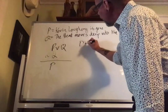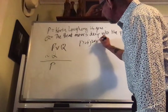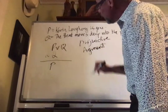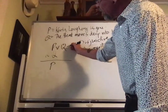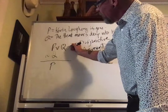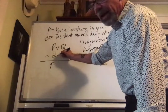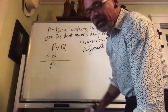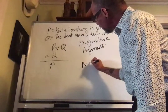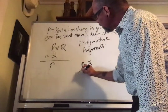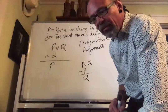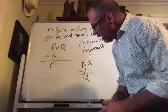This is an instance of the valid argument form disjunctive argument. In disjunctive argument, one premise is a disjunction, the other premise is the negation of one of the disjuncts, and the conclusion is the other disjunct. Disjunctive argument could also look like P wedge Q with negation P for the premises and Q for the conclusion — that counts as exactly the same pattern.